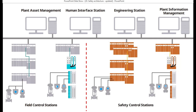Whatever the process is doing, operators need to get to know through the human interface station, where the operators sit in the control room and watch the process and control it. Normally the process is running in an automated way, but if there is any abnormality — such as high level, low level, or high temperature — they need to take action. That is why the human interface station is where the operators are sitting and doing the control.